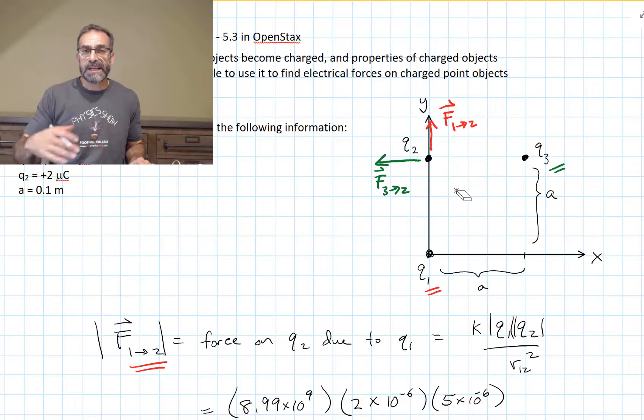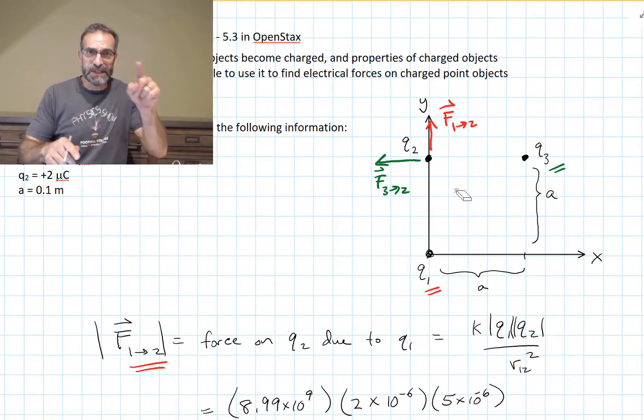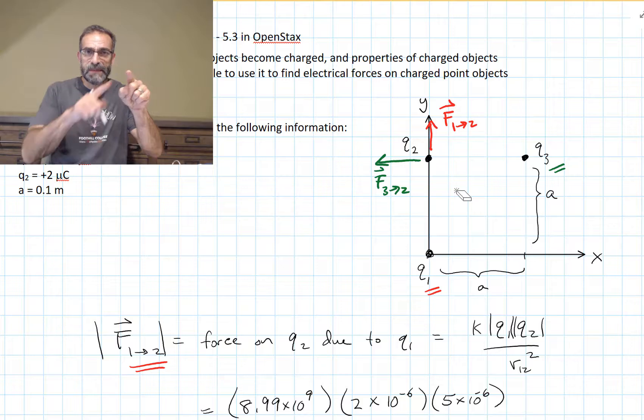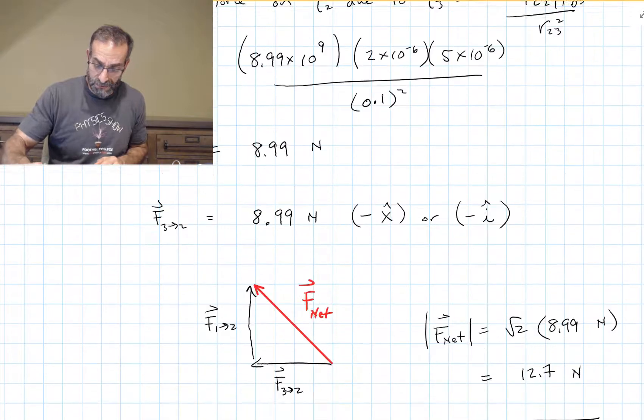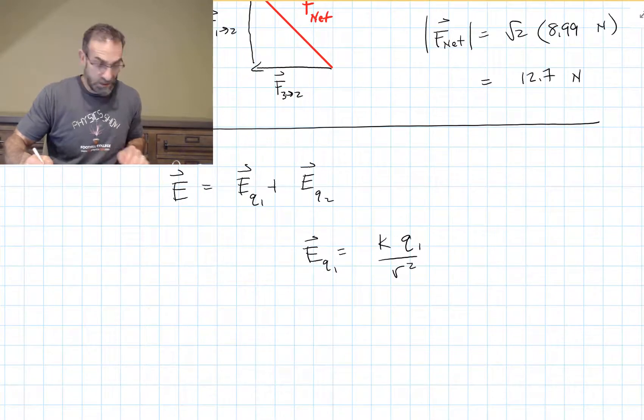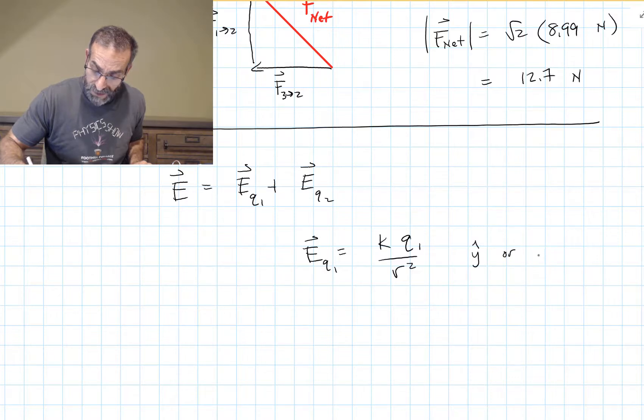When you use equations, get in the habit of thinking about what each variable stands for. What is it? The distance between what? The distance between our point of interest, where we want to know what the electric field is, and our point charge that's creating the electric field. That's what we're looking for here. And of course, the direction would be Y hat or J hat.